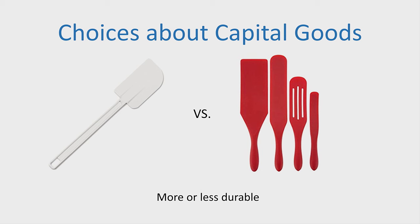Because all capital goods are perishable, they each have a rate at which they're used up, which we call depreciation. Each particular capital good depreciates at a different rate.